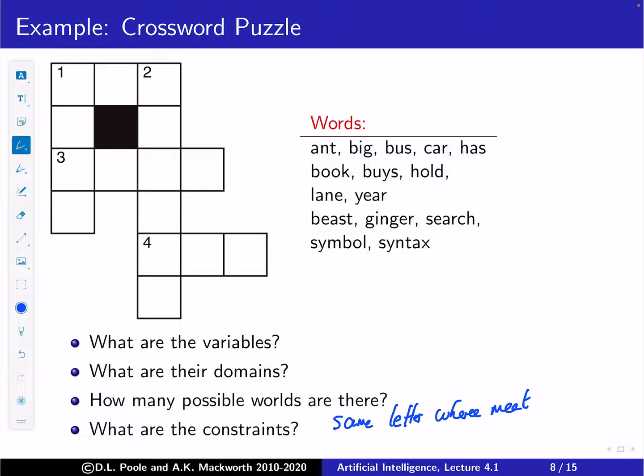In Python-style notation: the zeroth character of one-across must equal the zeroth character of one-down, and the third character of one-across must equal the first character of two-across, and so on. Those are the constraints for the crossword.